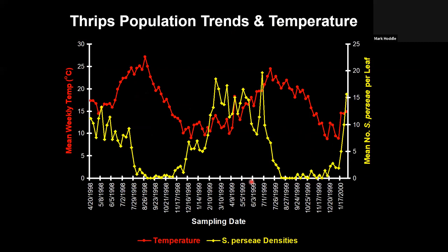These thrips are native to the highlands of Mexico and Guatemala, where temperatures tend to be quite temperate. Feeding pressure and thrips populations tend to be greatest where temperatures are relatively cool year-round, especially within one to five miles of the coast, and decline significantly as you move inland where temperatures become hotter. Tracking population dynamics through time compared with temperature: when temperatures go up, avocado thrips populations go down, and when temperatures are low, populations increase.